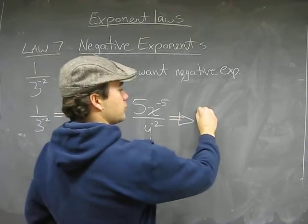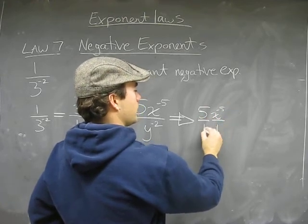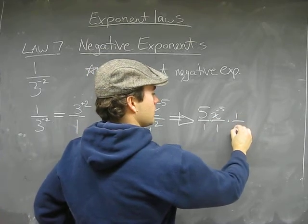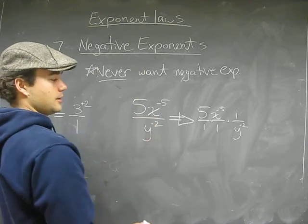First of all, this is really the same as five x to the minus five over one, times one over y to the minus two, right? Because it's multiplying—there's little multiply signs there.